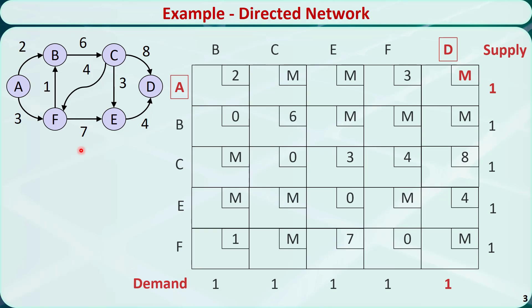Let's formulate the transportation tableau for this transshipment problem. We put node A in the first row and node D in the last column. The supply of node A is 1, the demand of node D is 1. For each transshipment node, we add a row and a column. The supply for each row is 1, and the demand for each column is 1.